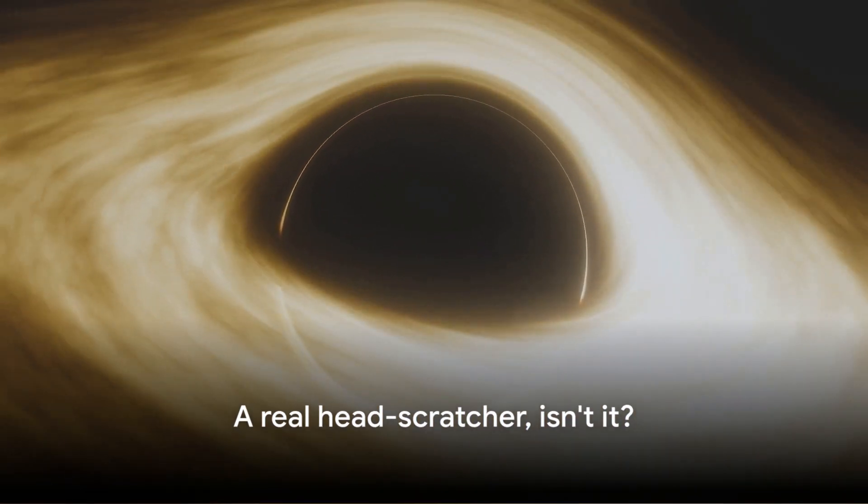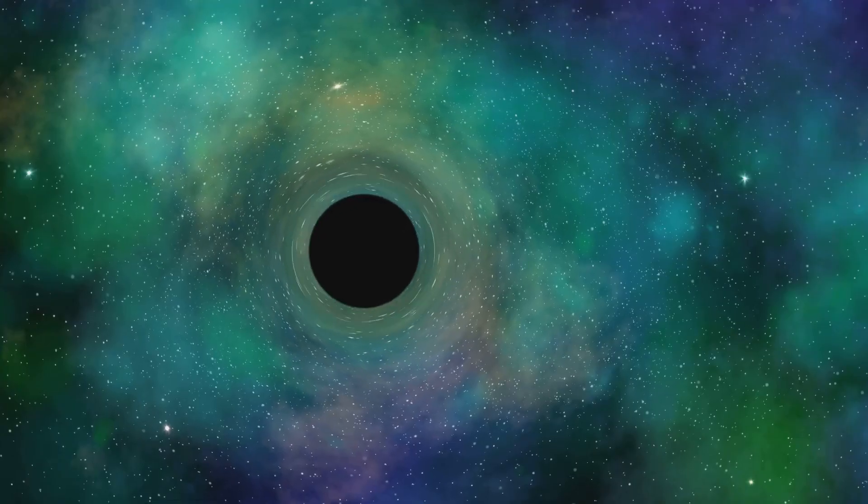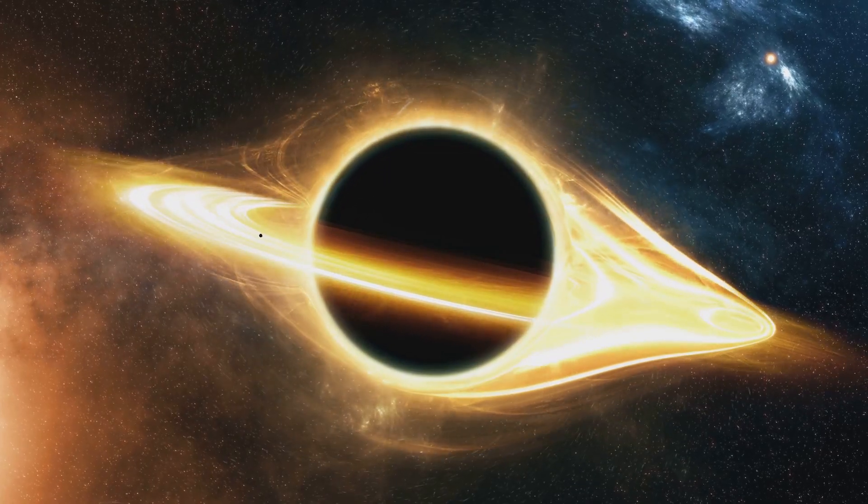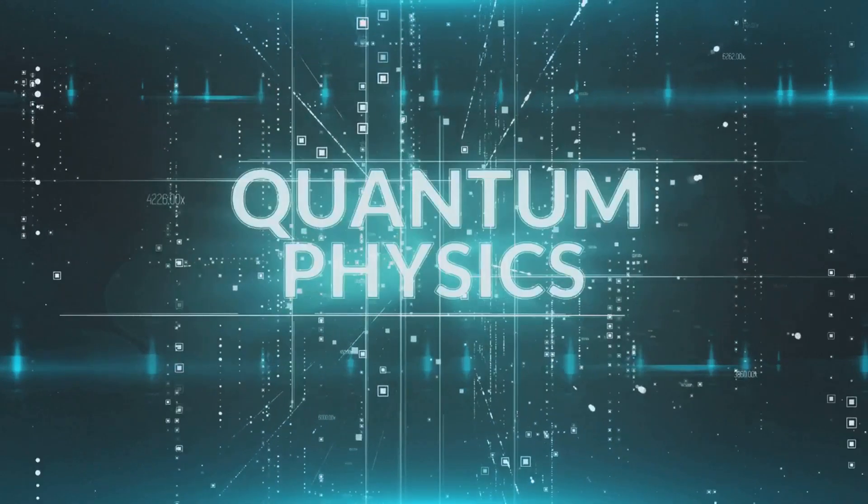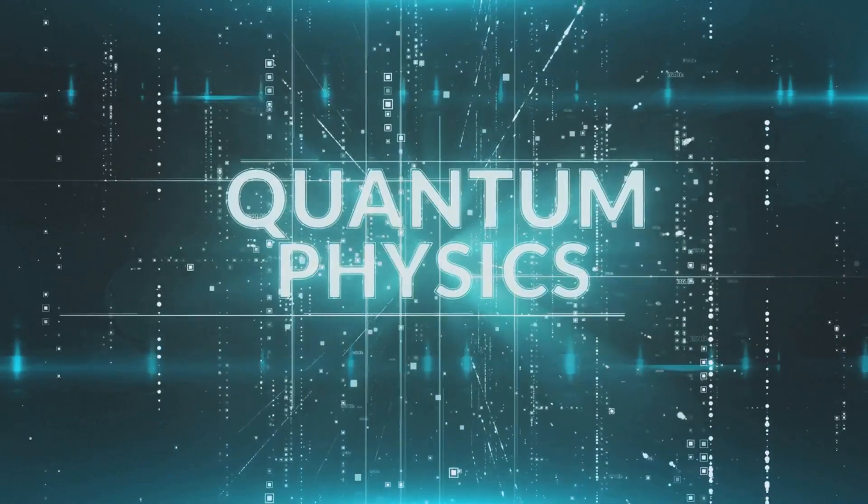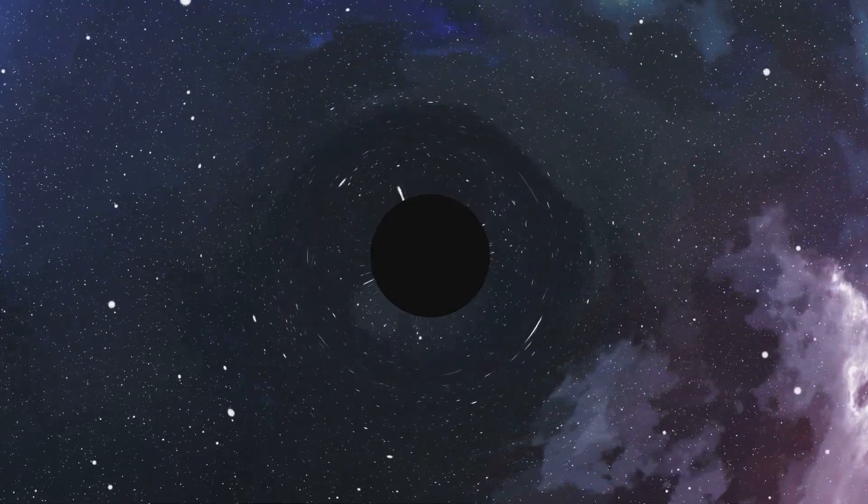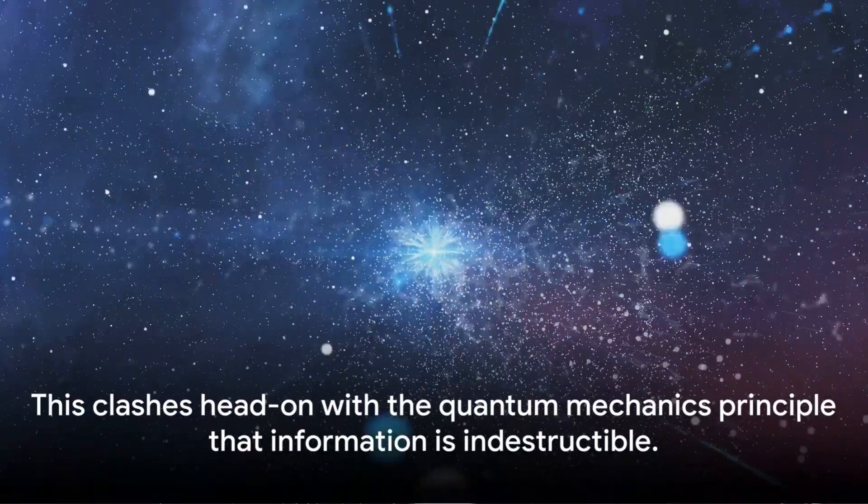Stephen Hawking took this paradox a step further. He proposed that black holes radiate a type of energy known as Hawking radiation. Over time, this radiation could cause a black hole to evaporate completely. But here's the catch. Hawking radiation is featureless. It doesn't carry any information about what fell into the black hole. So if a black hole evaporates, the information seems to vanish, poof, gone without a trace. This clashes head-on with the quantum mechanics principle that information is indestructible.